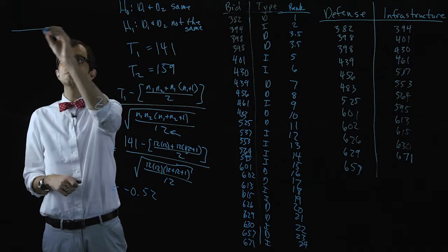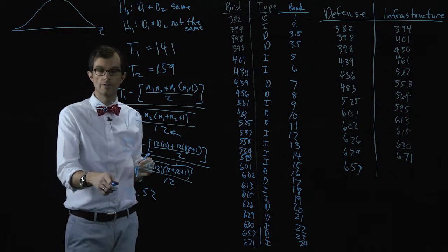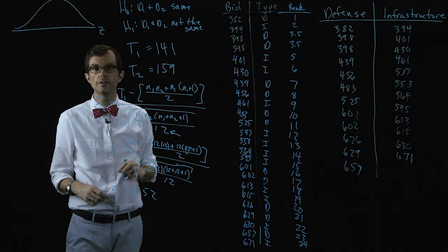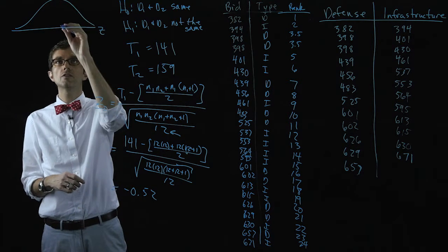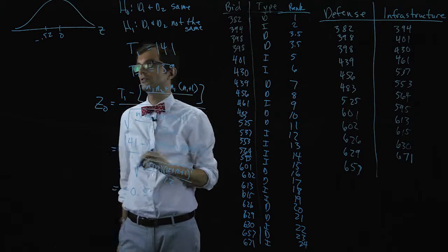So let's plot that test statistic on the z axis, this is a z test statistic. And so here's zero, here is negative point five two.